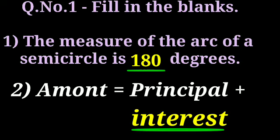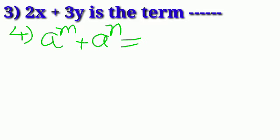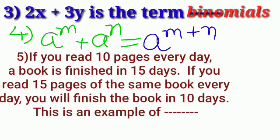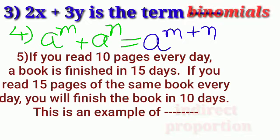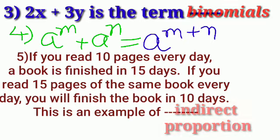Question number 1, fill in the blanks. Sub question number 3. 2x plus 3y is the binomial term. 4th, a raised to m plus a raised to n, answer is a raised to m plus n.